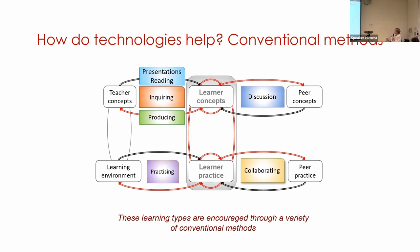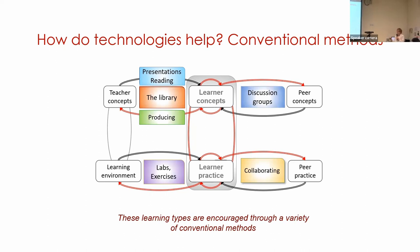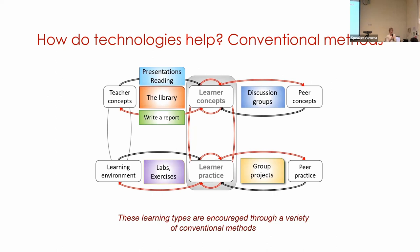In conventional technologies: for learning through acquisition we have presentations and reading; for inquiry, we send students to the library or give them papers; for practice, you can have labs, exercises, or quizzes; for discussion, you set up small group discussion groups; for collaborating, you give group projects; for producing, you give essays or reports to write. So our conventional teaching and learning methods are all mapped onto the conversational framework.